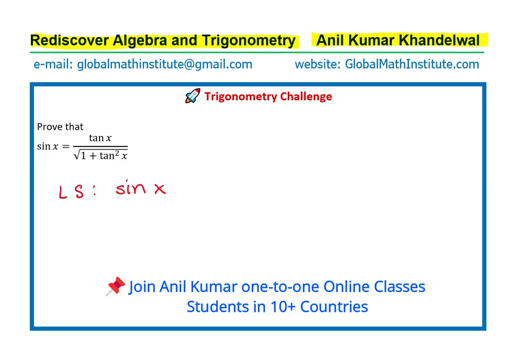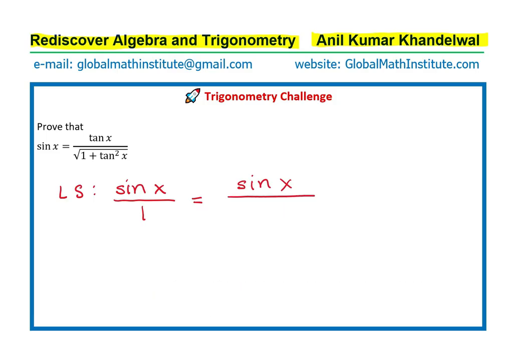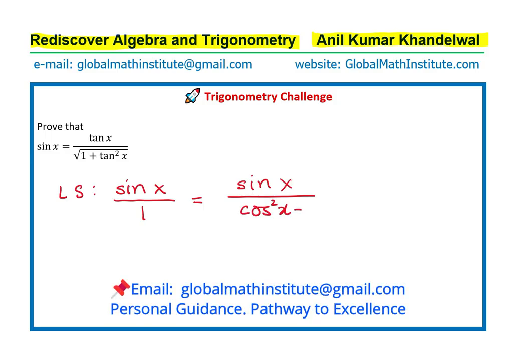We could write sin x over 1. Now, 1 is like sin square x plus cos square x. So, we could also write this as cos square x plus sin square x. I wrote it as cos square x plus sin square x mainly because we have 1 plus tan square x.